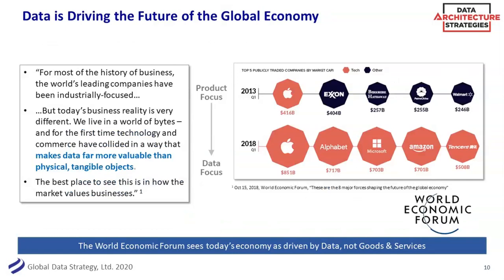A World Economic Forum report showed that in the old days everything was brick and mortar — business driven by product focus. Seven years ago the biggest companies were things like Walmart and ExxonMobil. Now it's a data focus — Alphabet, Google, Amazon, Microsoft. Their finding was that for the first time in recent history, data is more valuable than the actual products being sold. Amazon isn't the leader because they sell the best widgets — they sell widgets in the best way through data. Everyone needs to be in some way data-driven.